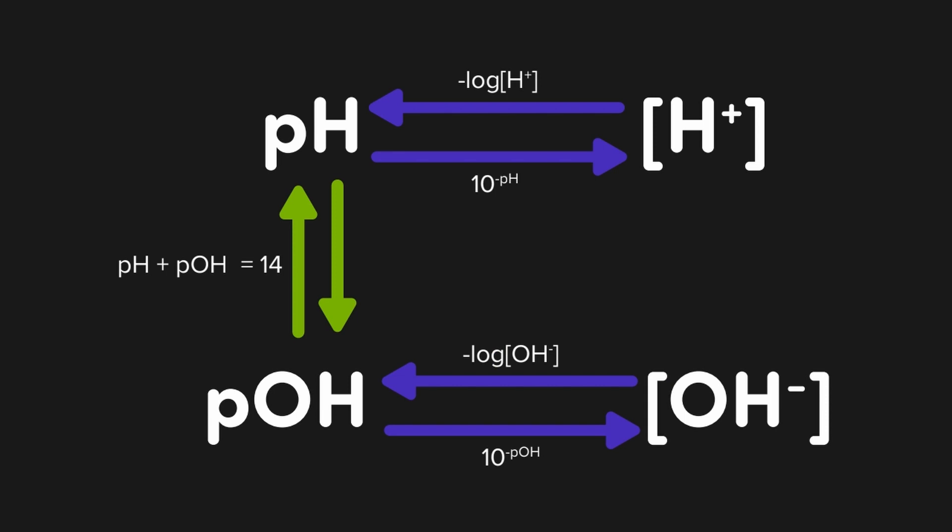If we put this together with our previous information, our map looks like this, where the p-scale values and their non-p-scale counterparts are connected as well as the two p-scale values.